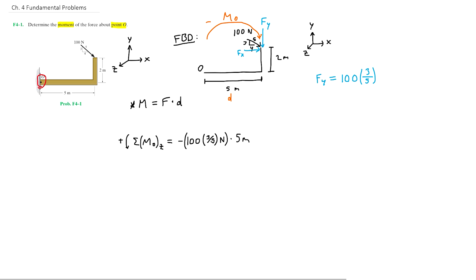Now we have our second moment which is created by the force in the x direction. Notice that we're going along the vertical direction from point O to Fx using the right hand rule, which results in another clockwise moment. Our distance here is 2 meters. The value of Fx is equal to, again, the 100 newtons, this time times the horizontal side of the triangle which is 4 over the hypotenuse 5.